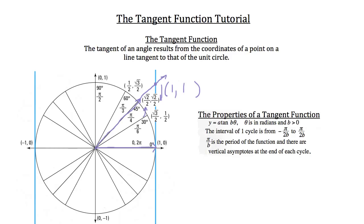Now let's look at the properties of a tangent function. The standard tangent function is y = a · tan(bθ). The parent function is y = tan(θ), which is a tangent graph without any transformations. The a and b values correspond to the amplitude and the period in cycles respectively. Theta is in radians and b must be greater than 0. The interval of one cycle is from -π/2b to π/2b, the period is π/b, and there are vertical asymptotes at the end of each cycle.